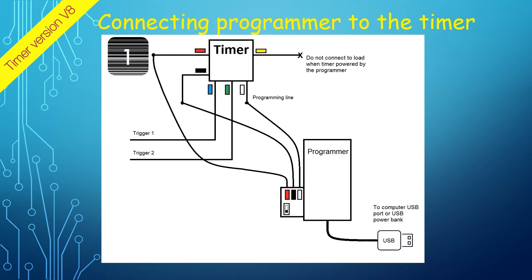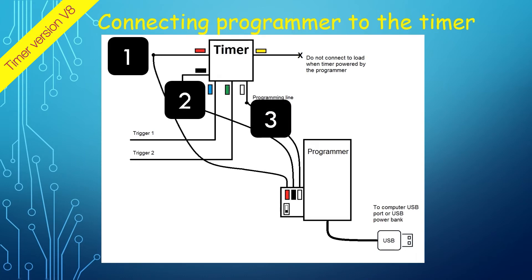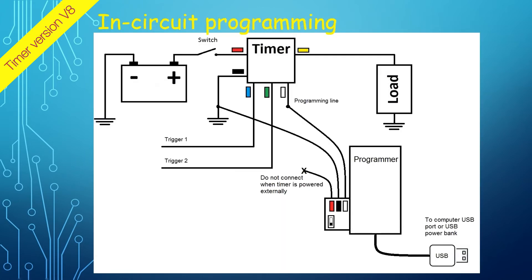The programmer is connected to the timer via three wires: power, ground, and data line. For in-circuit programming, the programmer is connected via only two wires, the ground and the data line.